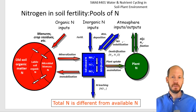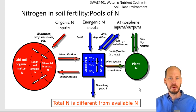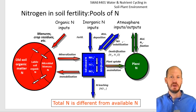Plants, through legumes with biological nitrogen fixation and symbiotic association with Rhizobium, will also have strong inputs from atmospheric nitrogen through the biological nitrogen fixation process.